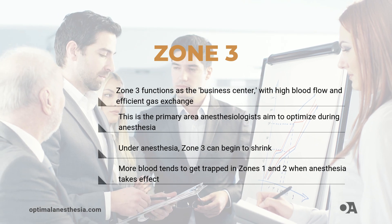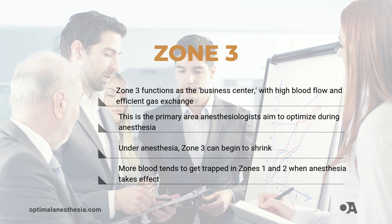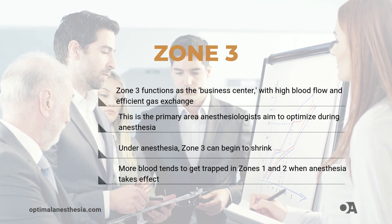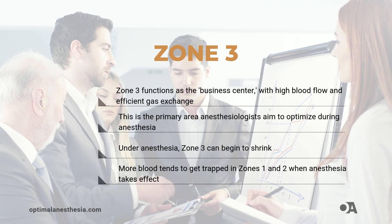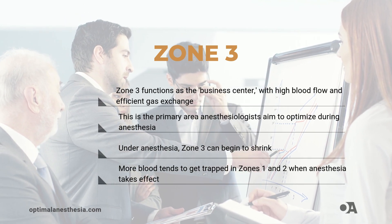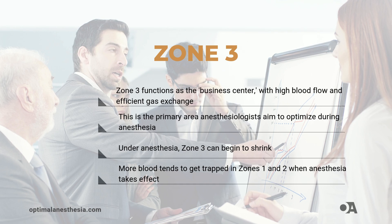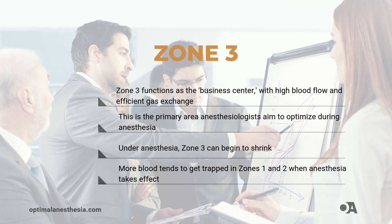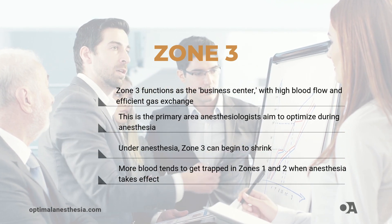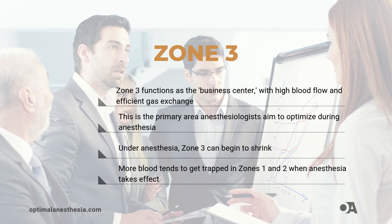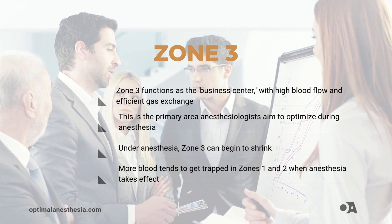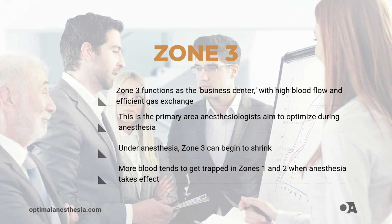Zone 3 is the zone where work gets done — lots of blood flow, efficient gas exchange, and everything working in harmony. This is the area we aim to optimize under anesthesia. But when anesthesia kicks in, this zone can start to shrink as more blood gets trapped in Zone 1 and Zone 2.